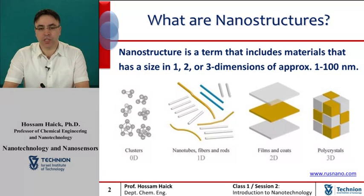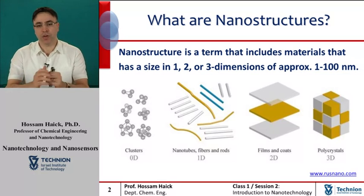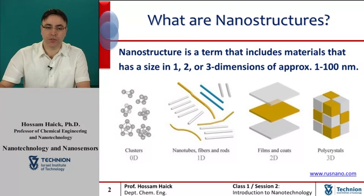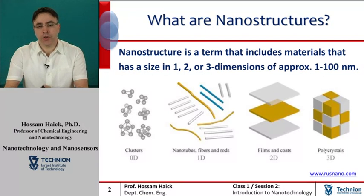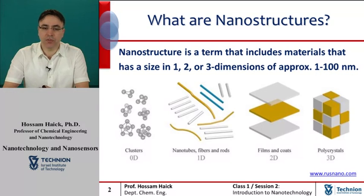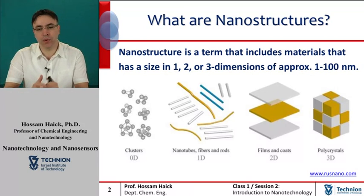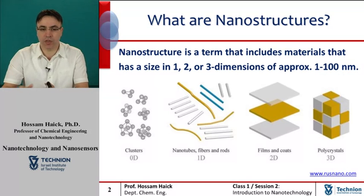Nanoclusters are structures that are 1 to 100 nanometers in each spatial dimension; these are categorized as zero-dimensional nanostructures. Nanotubes and nanowires have a characteristic diameter between 1 and 100 nanometers, and a length that could be much greater than that. These structures are categorized as one-dimensional nanostructures.